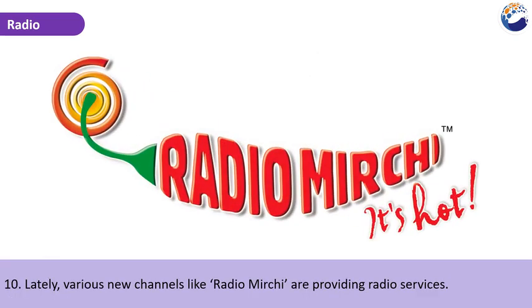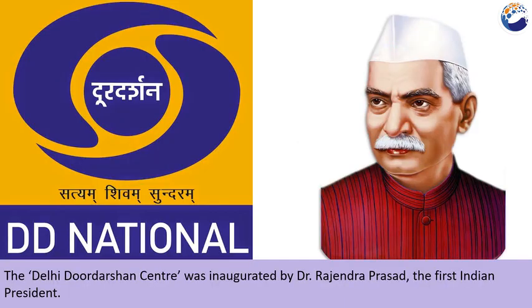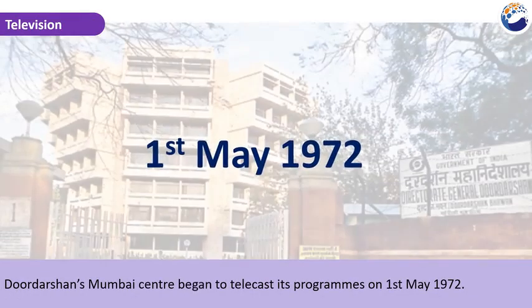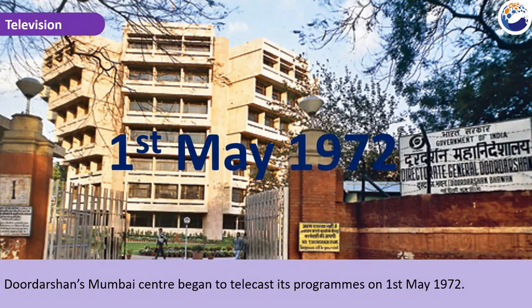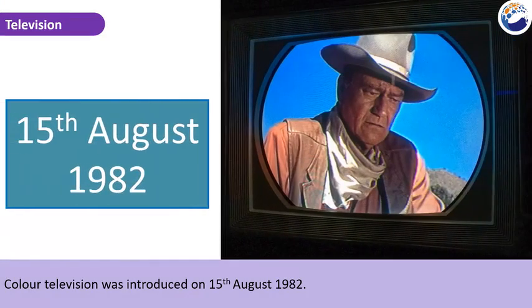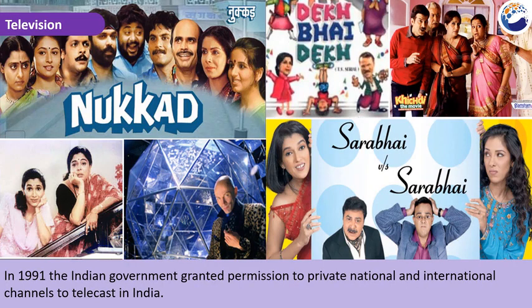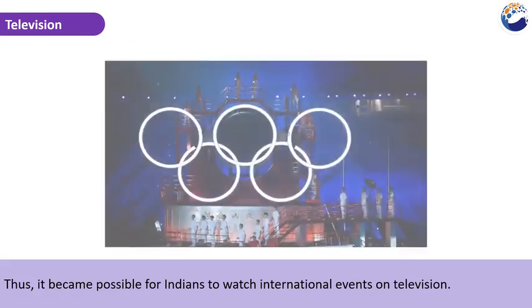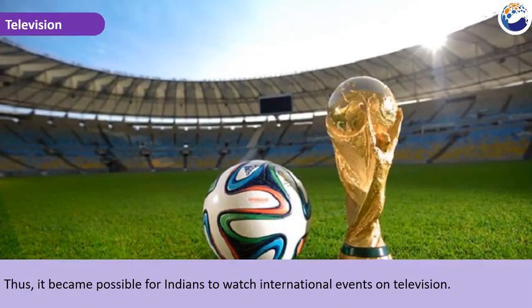Lately, various new channels like Radio Mirchi are providing radio services. The Delhi Doordarshan Centre was inaugurated by Dr. Rajendra Prasad, the first Indian president. Doordarshan's Mumbai Centre began to telecast its programs on 1st May 1972. Colour television was introduced on 15th August 1982. In 1991, the Indian government granted permission to private, national, and international channels to telecast in India, making it possible for Indians to watch international events on television.